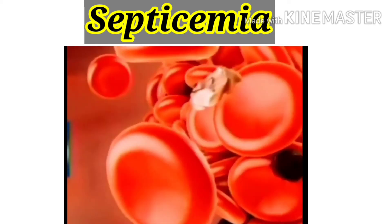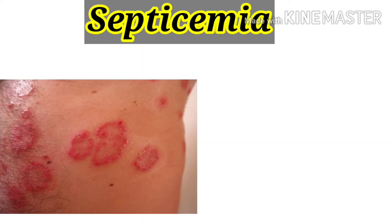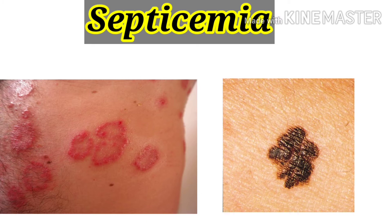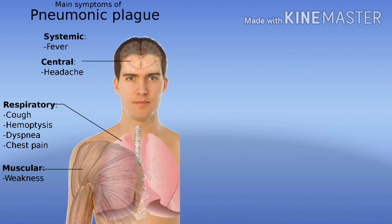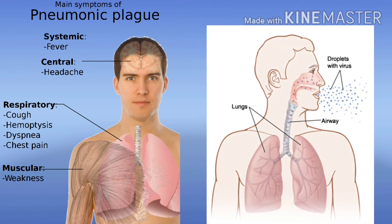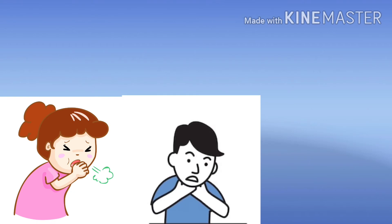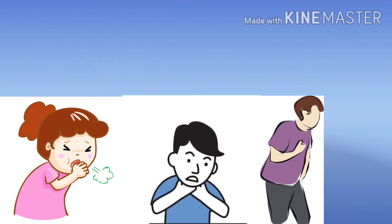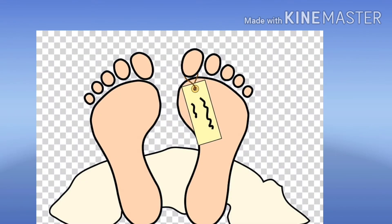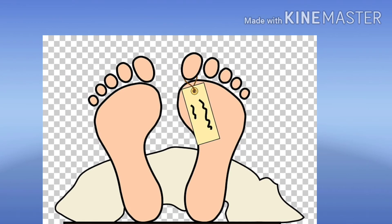Red spots may appear on the body and eventually may turn into black spots. Septicemic plague, if untreated, may lead to pneumonic plague, where the bacteria enters the lungs, resulting in symptoms like cough, shortness of breath, chest pain, respiratory failure, and eventually may lead to death.